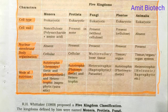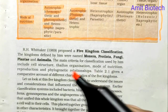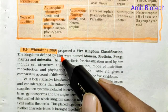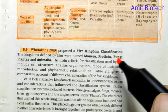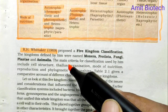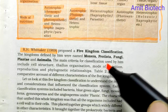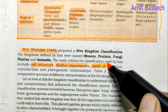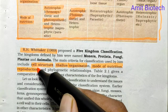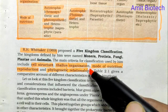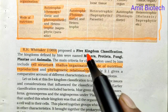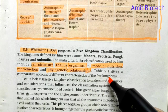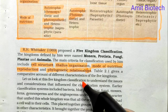In 1969, R.H. Whittaker proposed the five-kingdom classification. The kingdoms defined by him were Monera, Protista, Fungi, Plantae, and Animalia. The main criteria for classification used by him were cell structure, body organization, mode of nutrition, reproduction, and phylogenetic relationships.